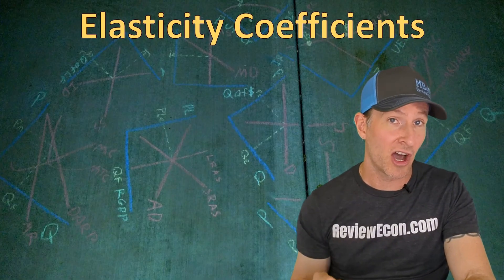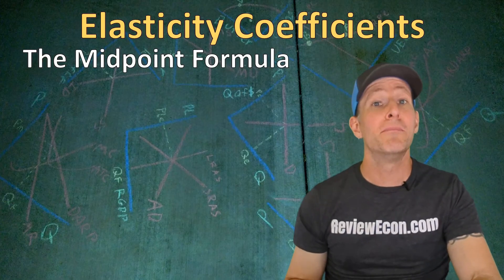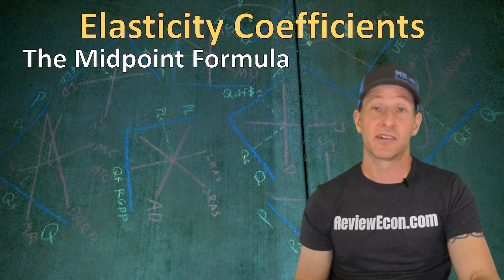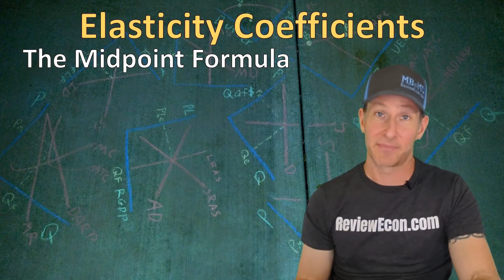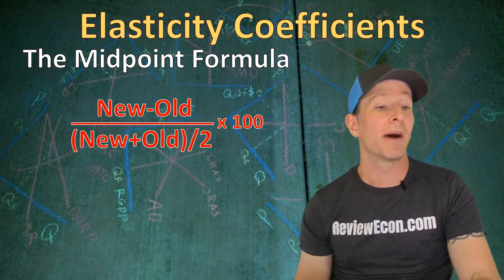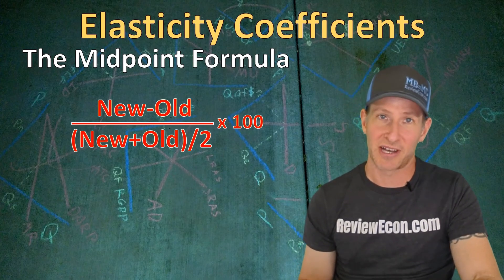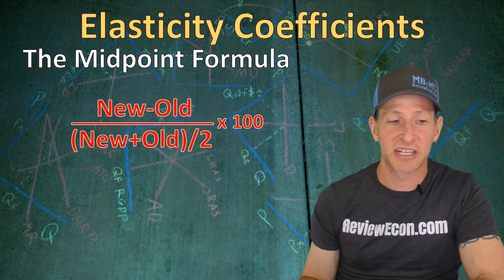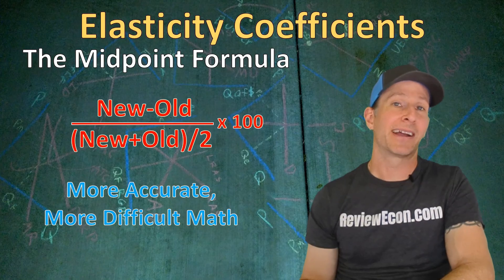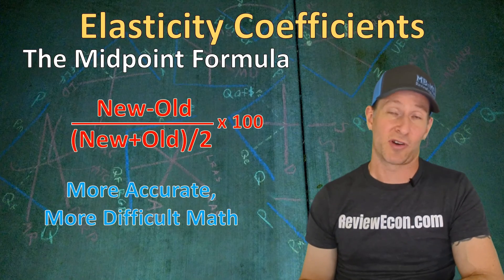Many economists prefer a different method called the midpoint formula: new minus old, divided by the average of new and old (i.e., new plus old divided by 2), times 100. This method is not the one recommended on the AP microeconomics exam, but use whichever your professor or teacher prefers. The midpoint formula is more accurate but involves more difficult math, and since the AP exam math is meant to be relatively simple, the endpoint method is all you need.